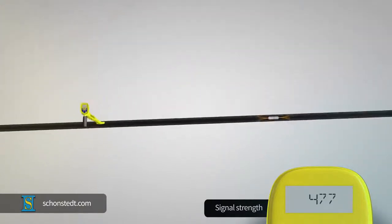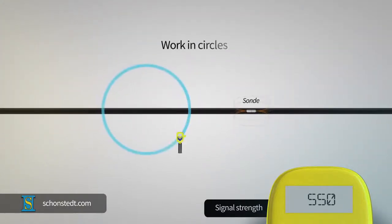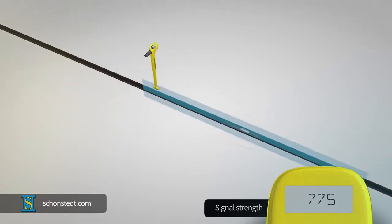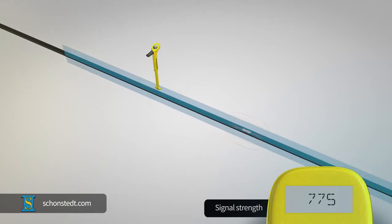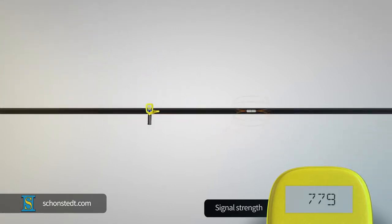To approach the sonde from a distance, it is best to work in circles while trying to determine where in the circle the signal is stronger. At that point, the sonde axis and the sensor axis are on the same plane.